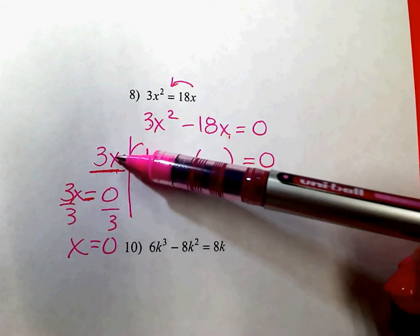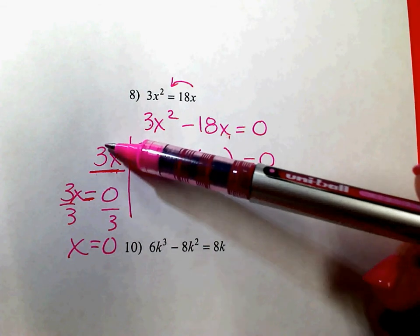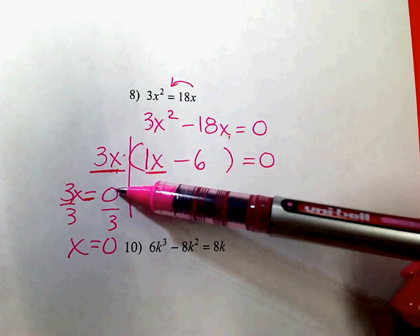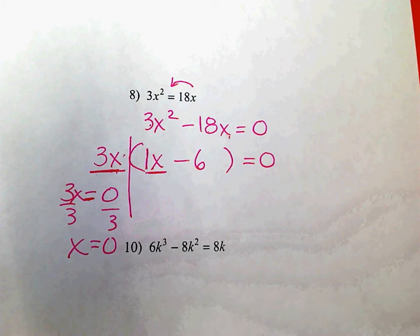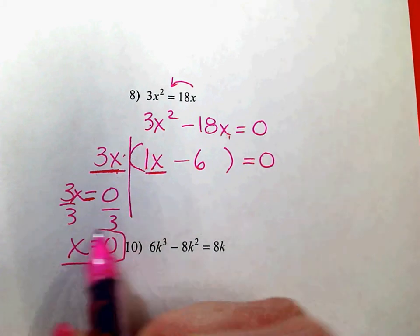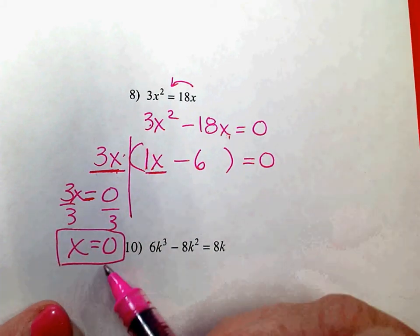But this is multiplication. This is asking you 3 times what would equal 0. So your only choice, if there's no plus or minus sign, your answer for x is always going to be 0. There's your first answer.